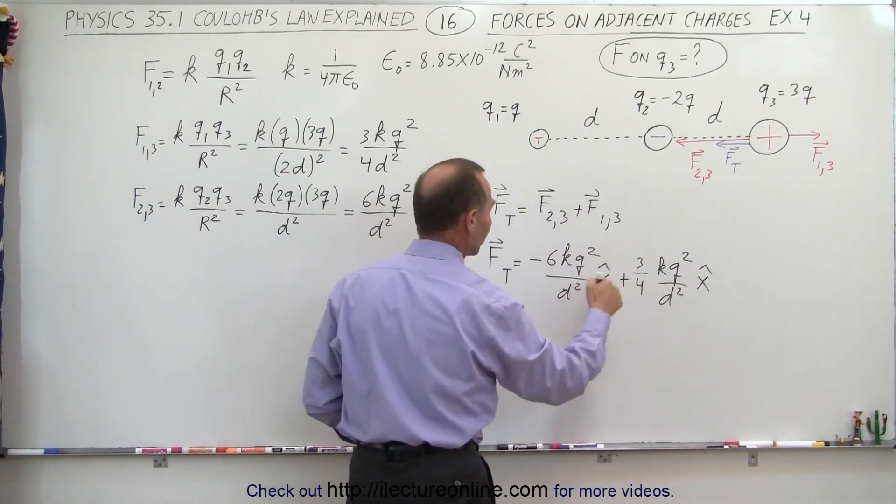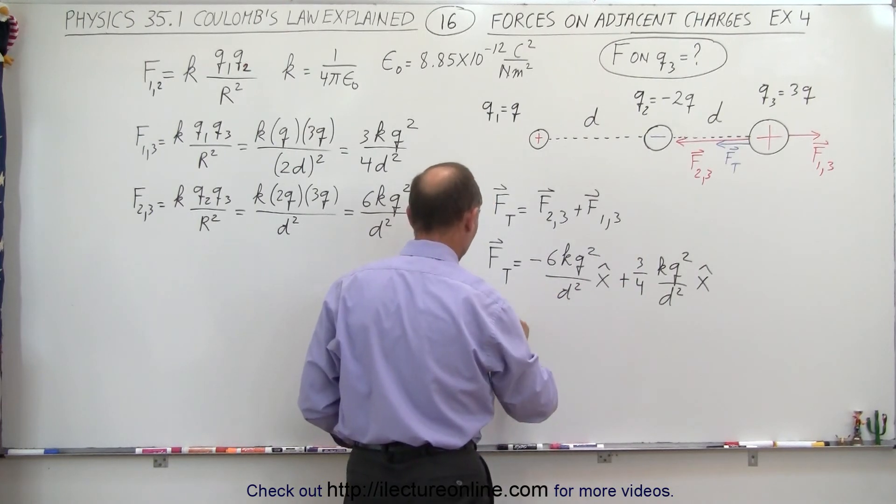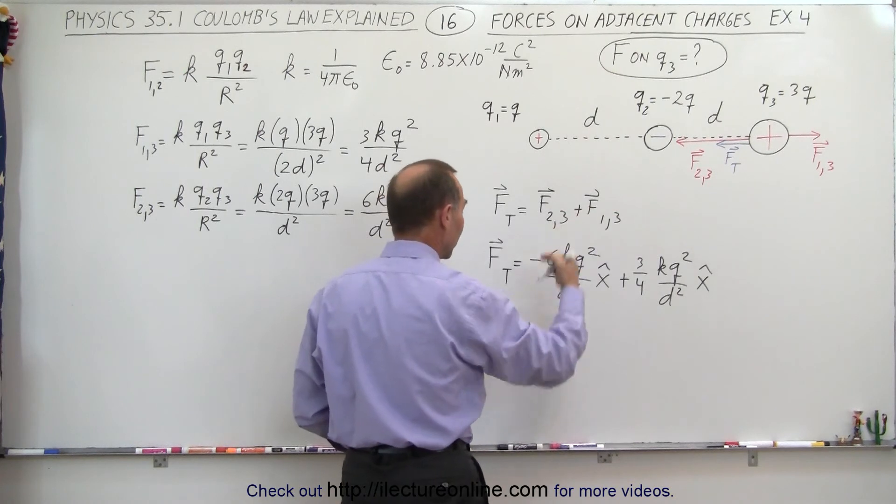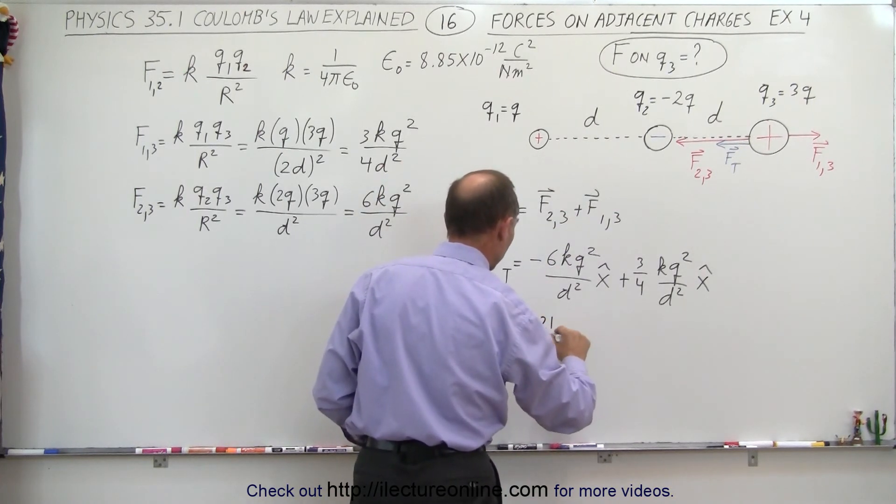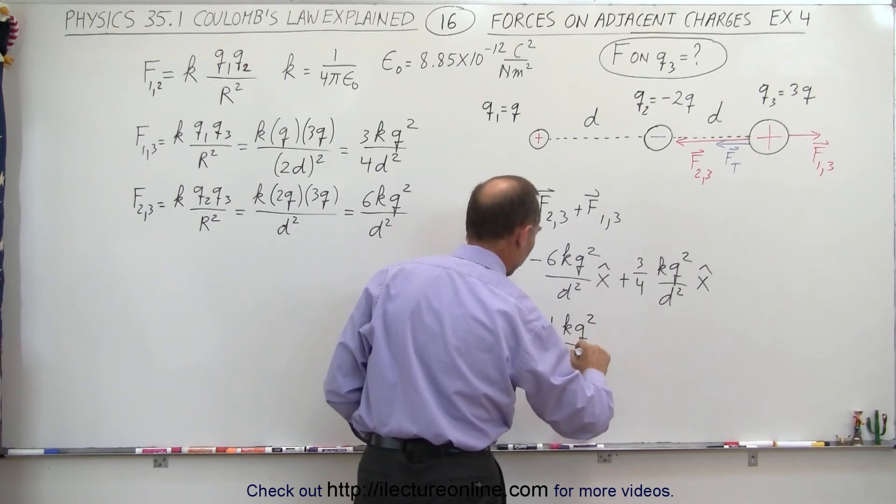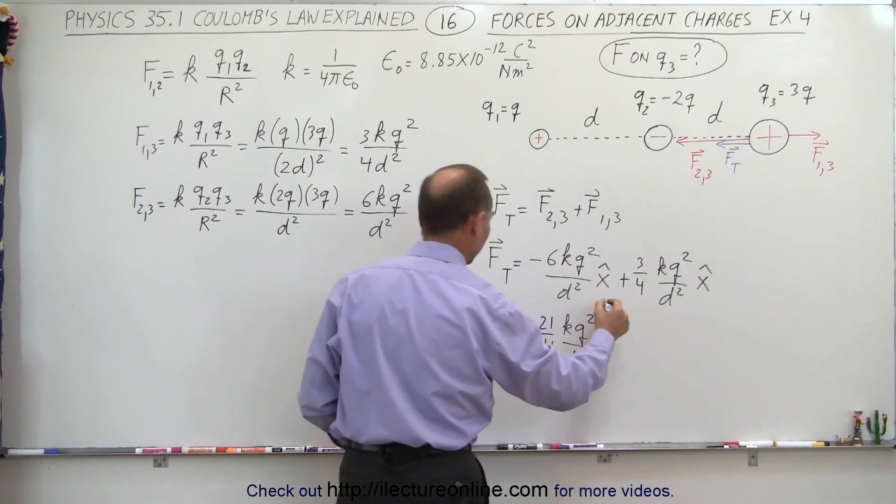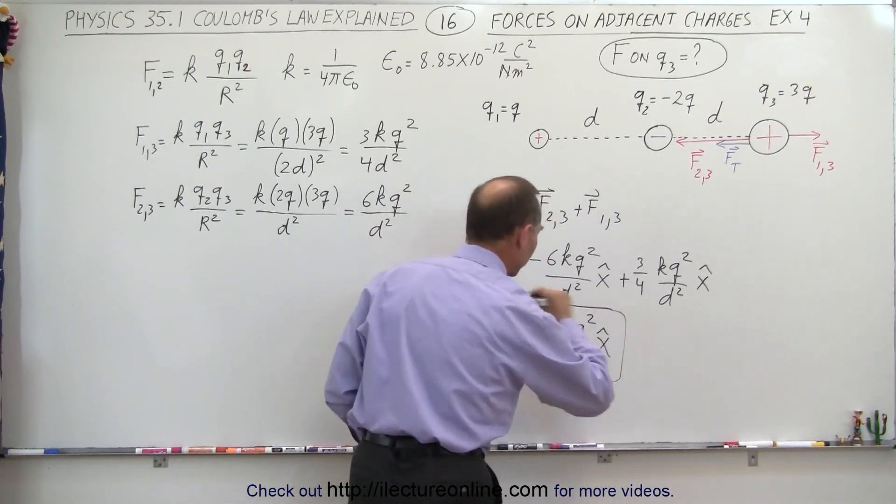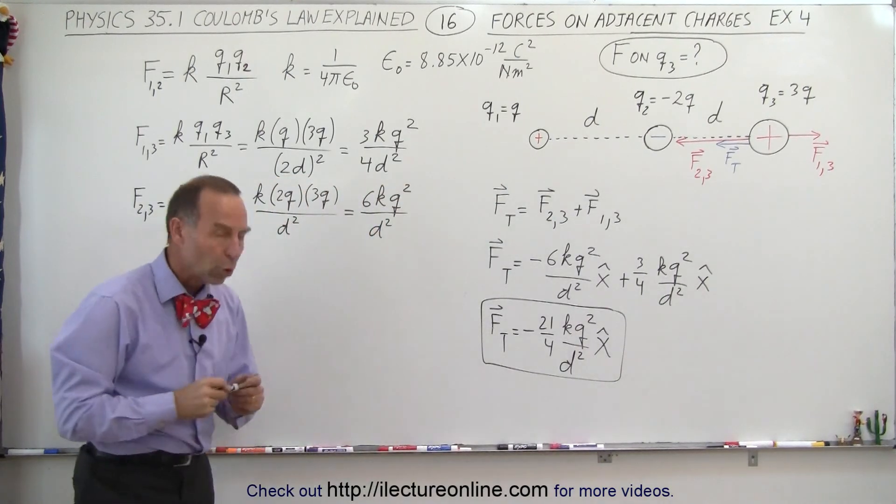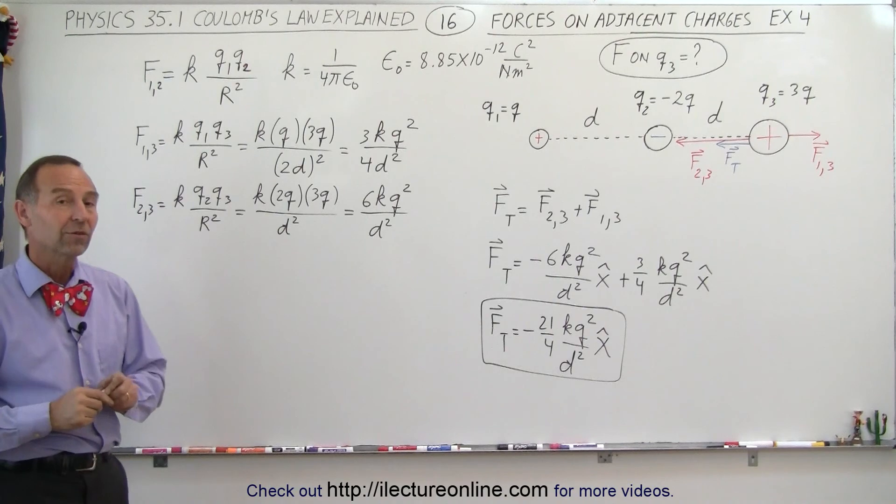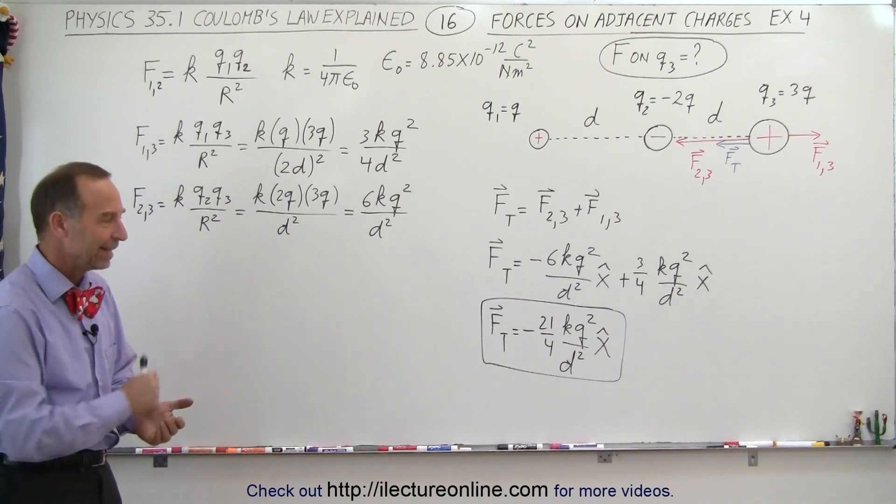And now when we add them together, that's 24 fourths minus 3 fourths, which is 21 fourths, so F total is equal to minus, because the total is in the negative direction, 21 over 4KQ² over D². That should be a D right here, let me try that again. D² like this, and in the X direction, we need the unit vector, and there's the final result for the total force on the third charge due to the presence of the other two. And that's how it's done.